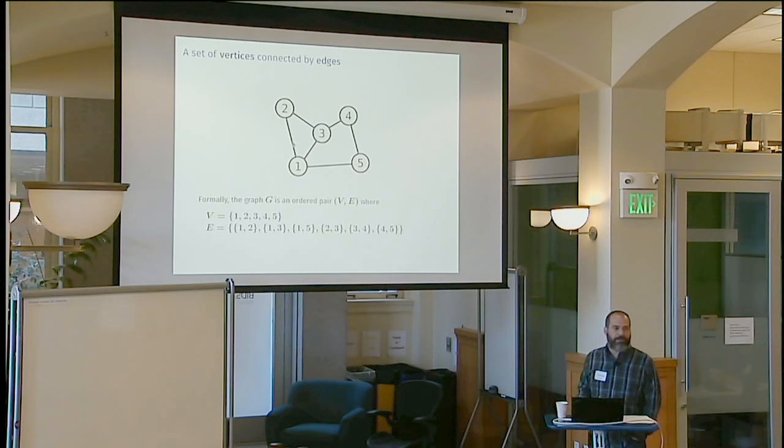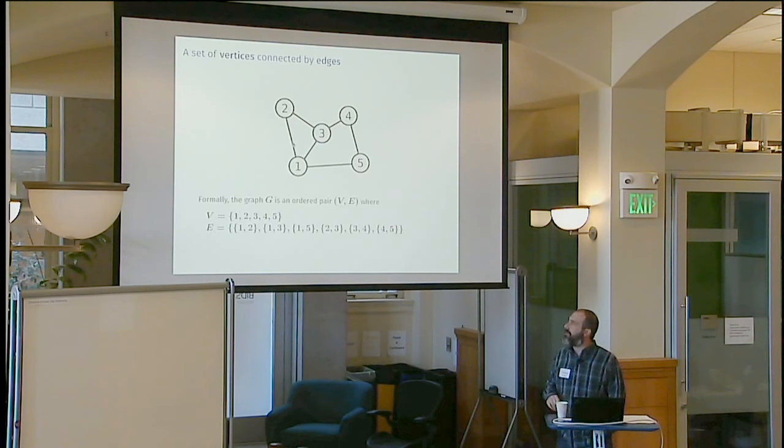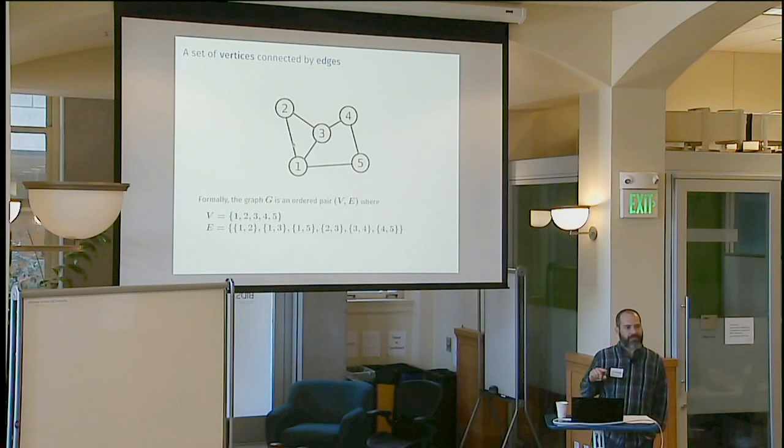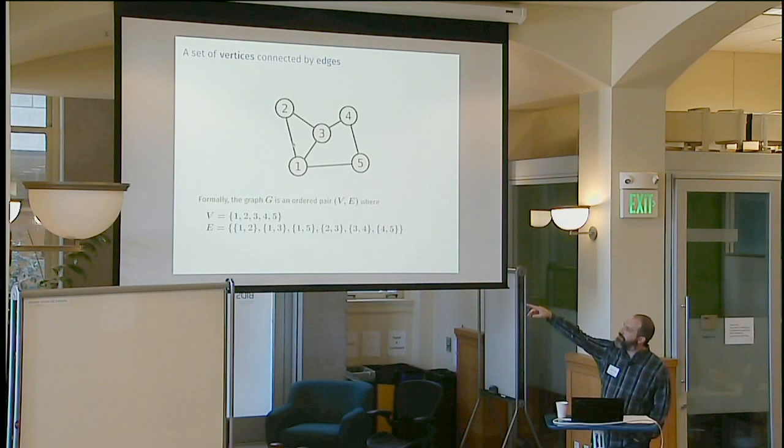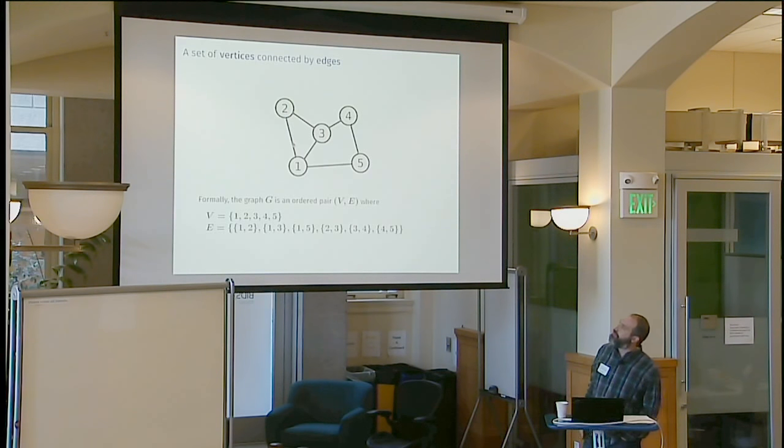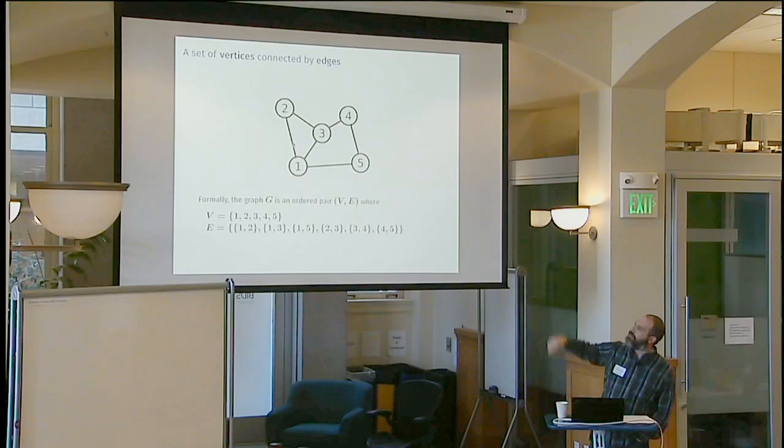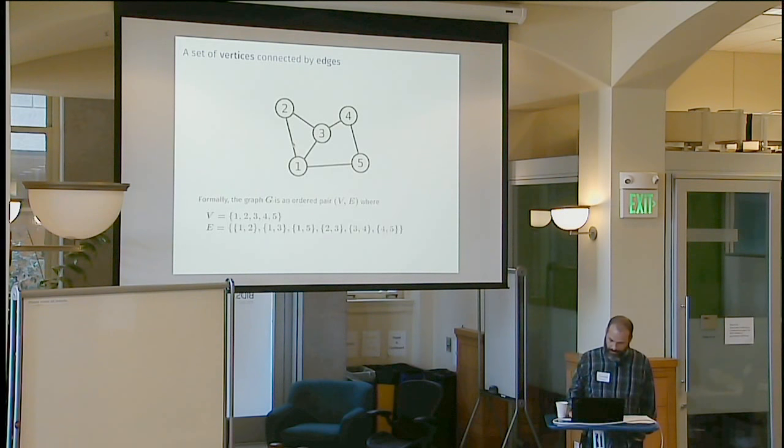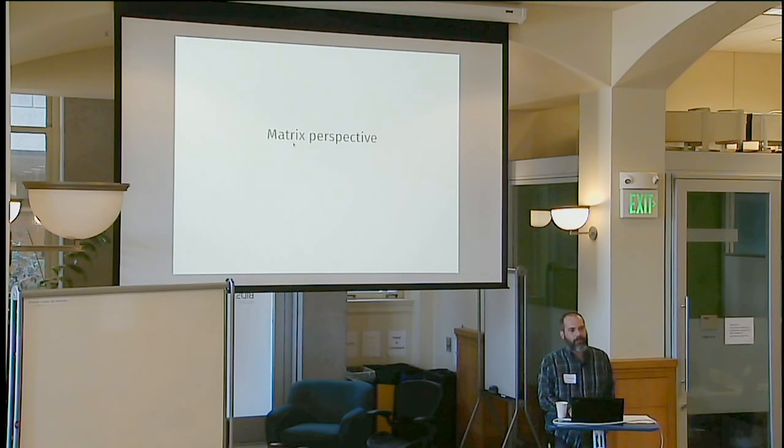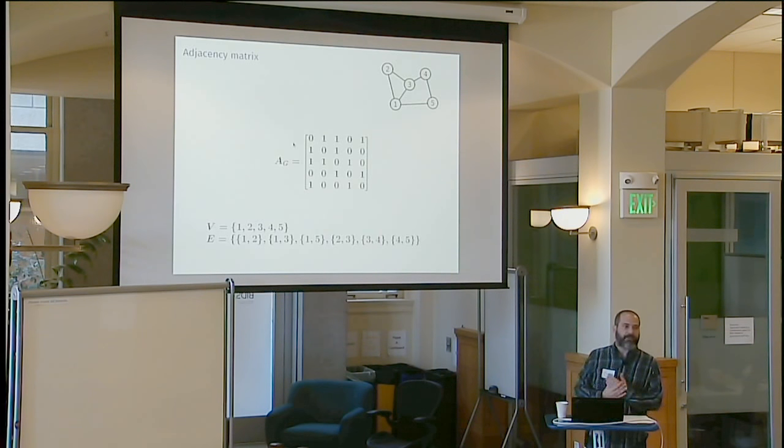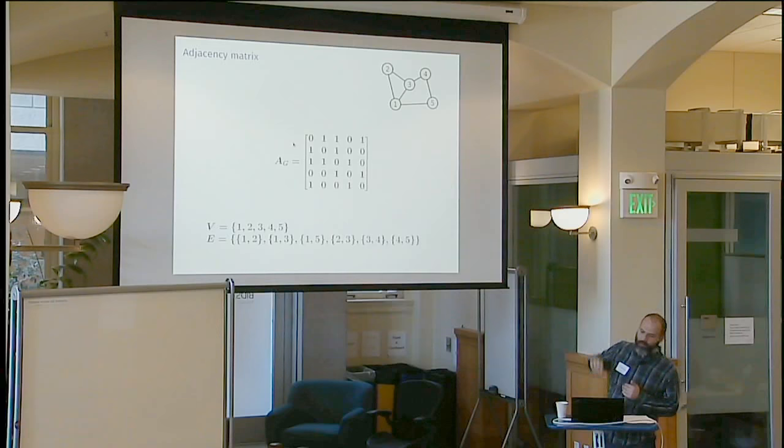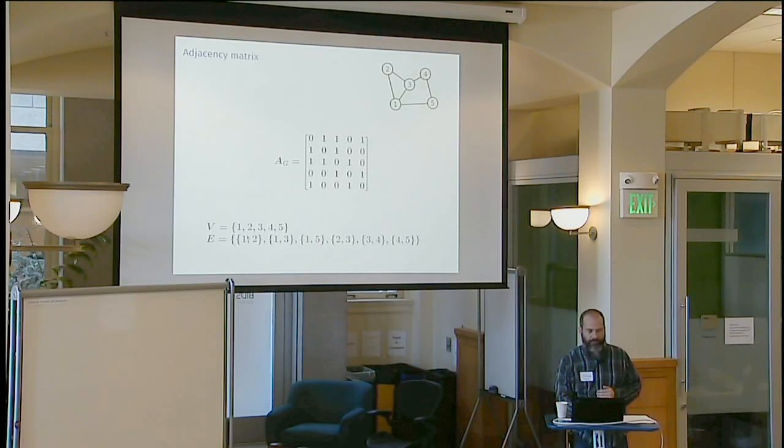Formally we often represent a graph, maybe call it G, as a pair of two things: vertices and edges, often called V and E. In this case they'd be one, two, three, four, five for the vertices. And then you've got these unordered pairs, so one and two or two and one, same thing, is one of the edges. There's another perspective that I think we'll see a lot today. This is one of the other ones I think we'll see a lot of, which is a matrix perspective.